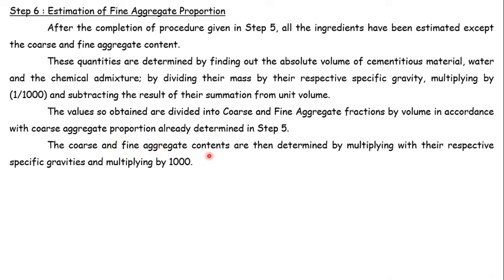The coarse and fine aggregate contents are then determined by multiplying with their respective specific gravities and multiplying by 1000. This step can be easily understood when solving mix design problems. After this video, the IS 10262-2009 code link will be provided along with numerical examples for mix proportioning.